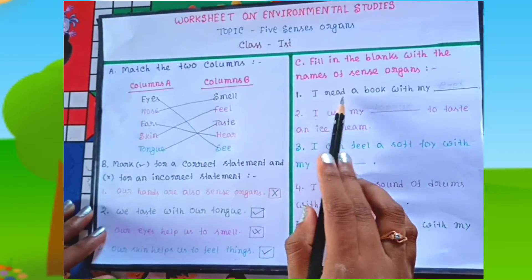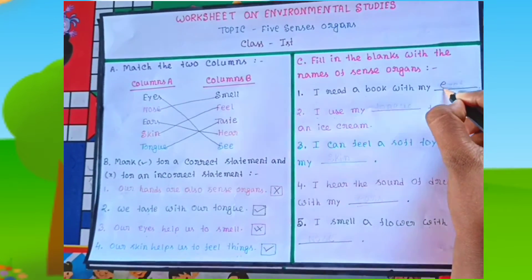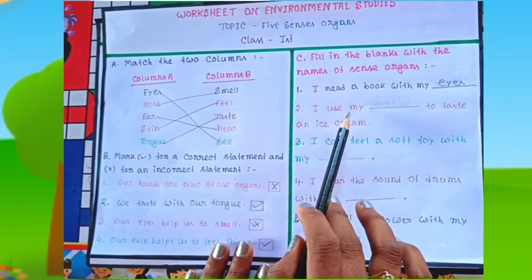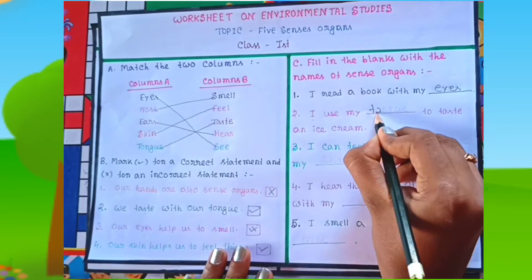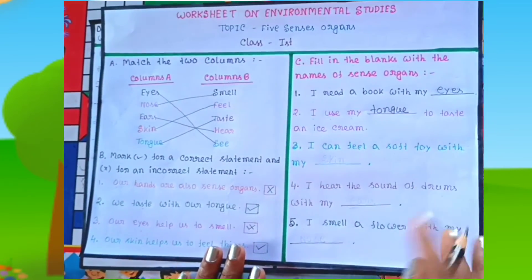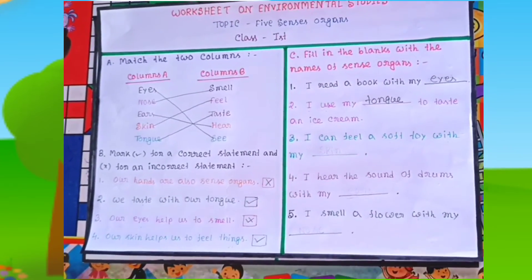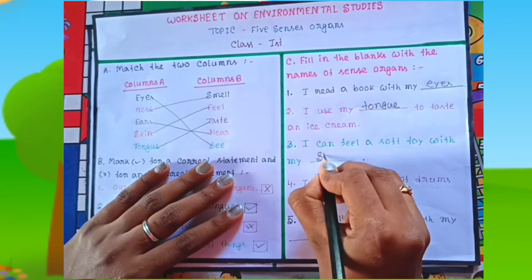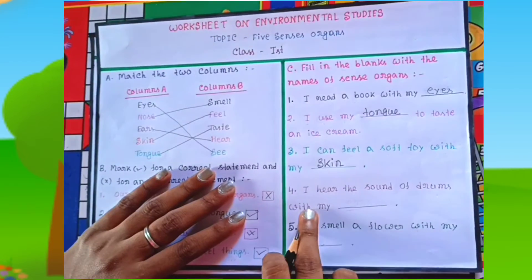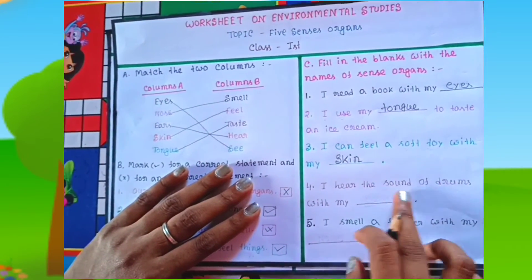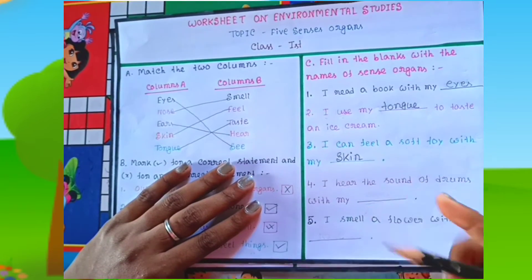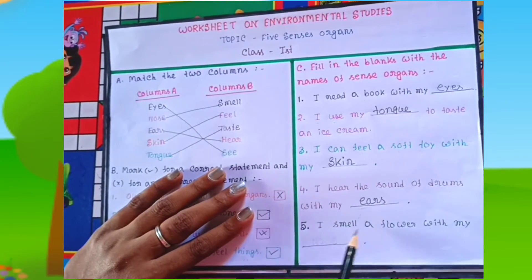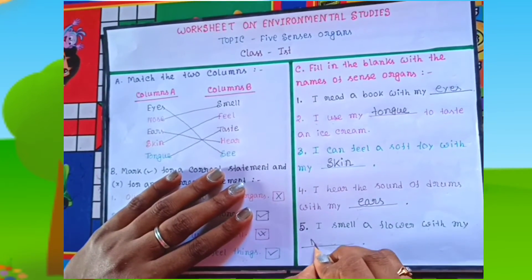Next question is fill in the blanks with the names of sense organs. First: I read a book with my eyes. Next: I use my tongue to taste an ice cream. Next: I can feel a soft toy with my skin. Next: I hear the sound of drums with my ears. And the last question is: I smell a flower with my nose.